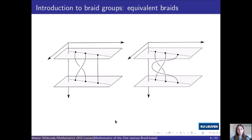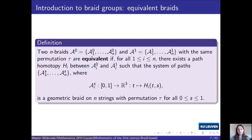To define the braid group, we won't just be working with a set of geometric braids on n-strings. Instead, we will be working with equivalence classes of these geometric braids. For example, take a look at the two braids on the side. We can obtain the braid on the right from the braid on the left by stretching out the third string. It is intuitively clear that stretching strings doesn't really fundamentally change a braid. With this in mind, we say that two n-braids with the same permutation τ are equivalent if for every i there exists a path homotopy between the i-th strings of both braids, such that during these homotopies the strings always form an n-braid with permutation τ. So basically, two braids with the same permutation are equivalent if you can obtain one from the other by stretching the strings such that the endpoints stay fixed.